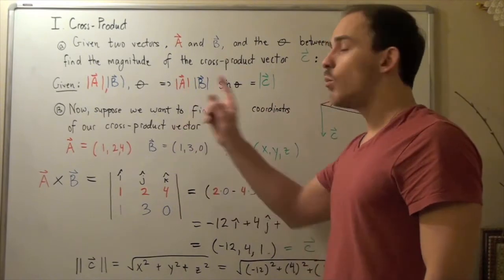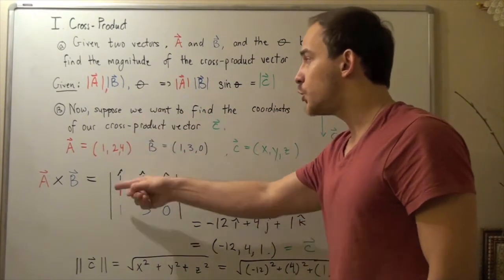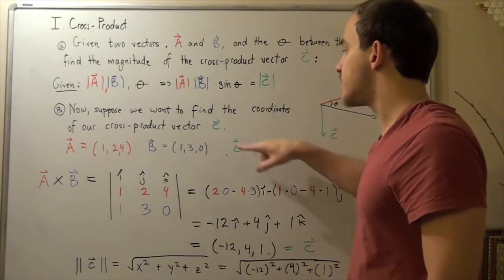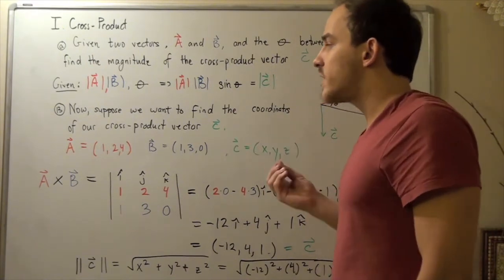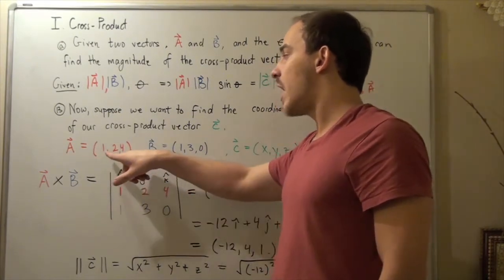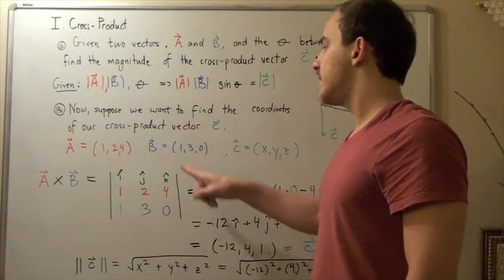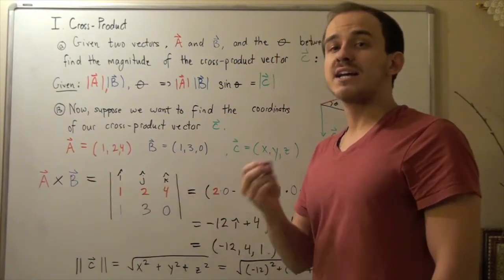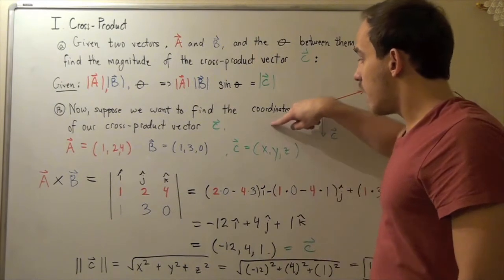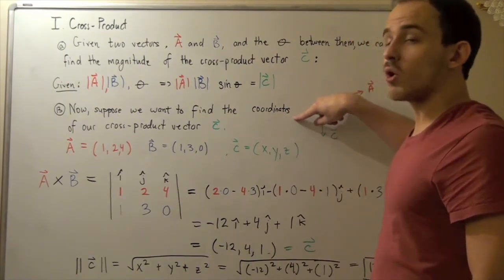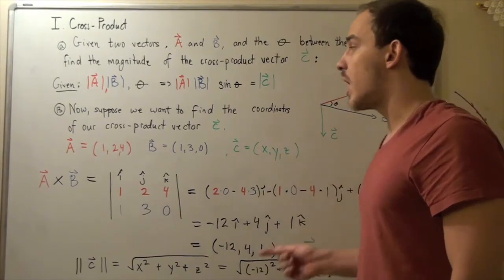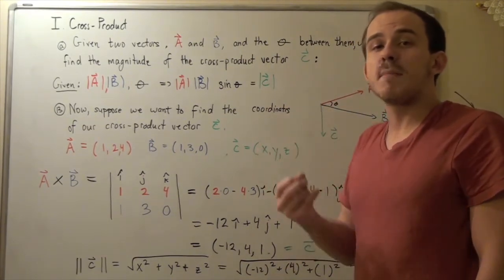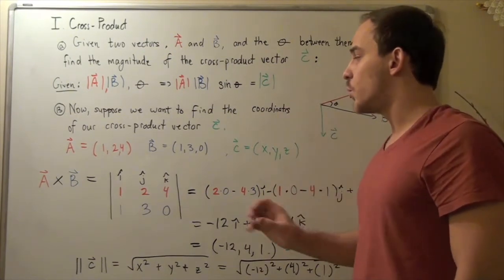But now, suppose we want to find the coordinates of the vector produced by taking the cross product A cross B — in other words, the coordinates of vector C. For example, if vector A is (1, 2, 4) and vector B is (1, 3, 0), these are three-dimensional vectors with points on the x, y, z plane. Can we find the x, y, and z coordinates of the vector produced? The answer is yes. A systematic way does exist, and I will show you it.